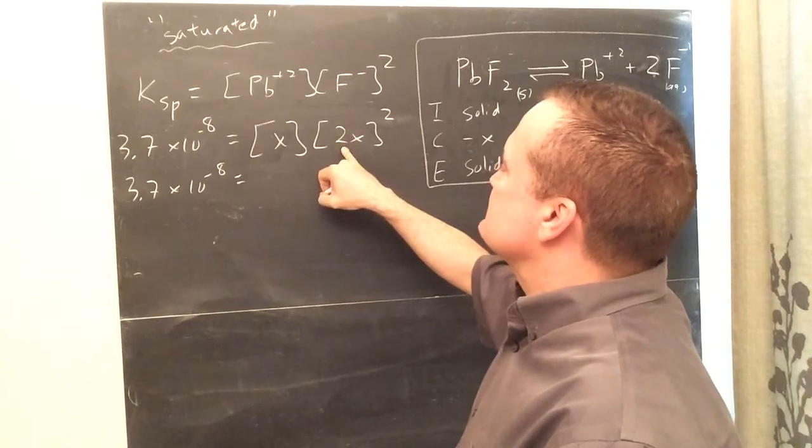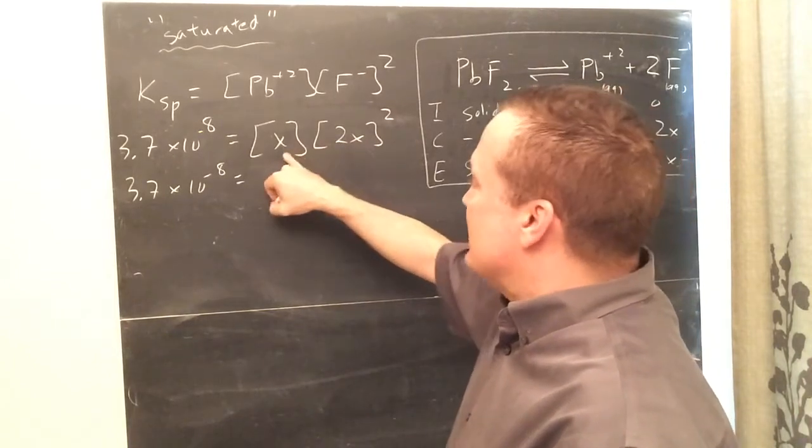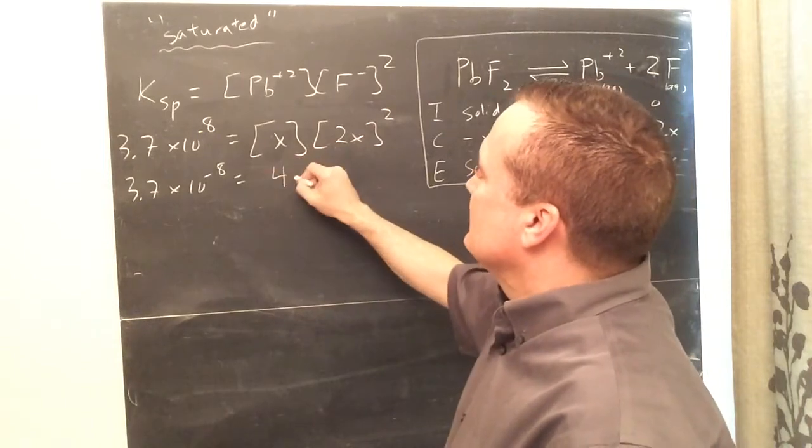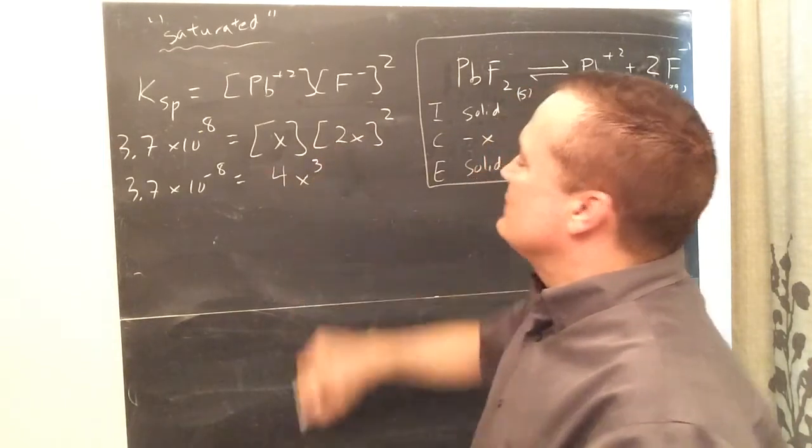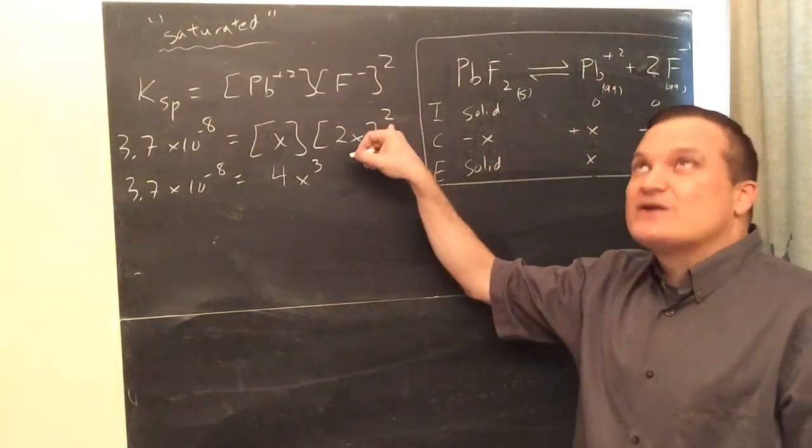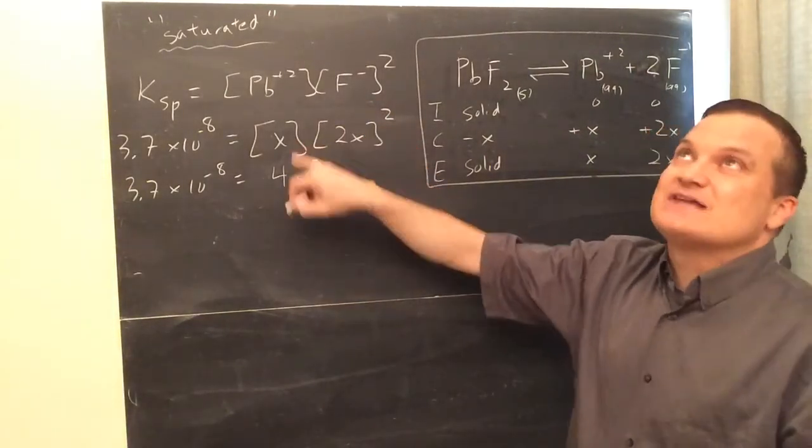2X squared is going to be 4, 2X times 2X, 2X times 2X times X. 2 times 2 is 4X squared, 4X cubed. Can you see that? If you need to wait or pause it for a minute, 4X cubed, 2X squared is 4X squared, 4X squared times X is 4X cubed.